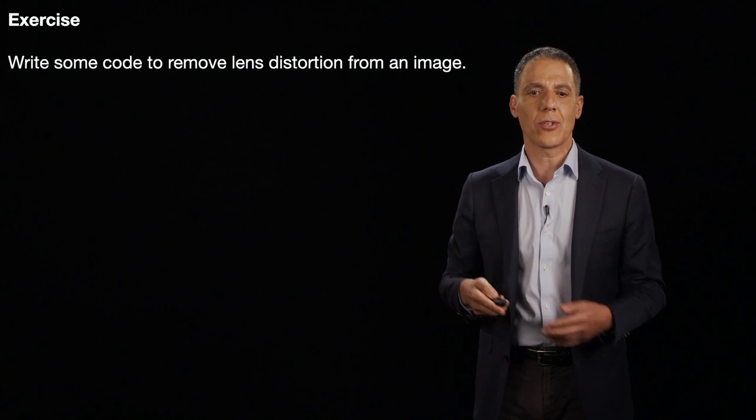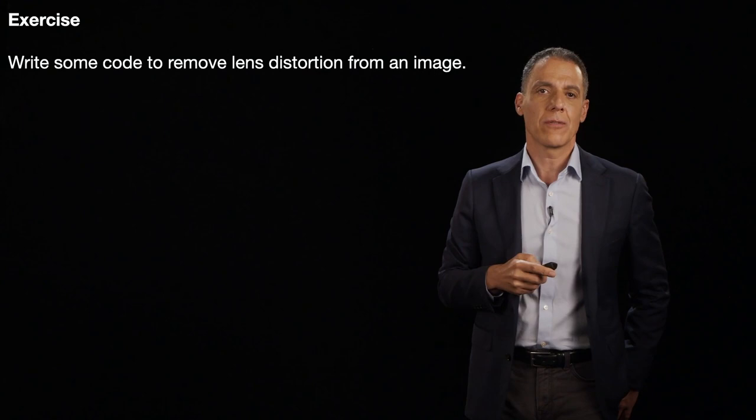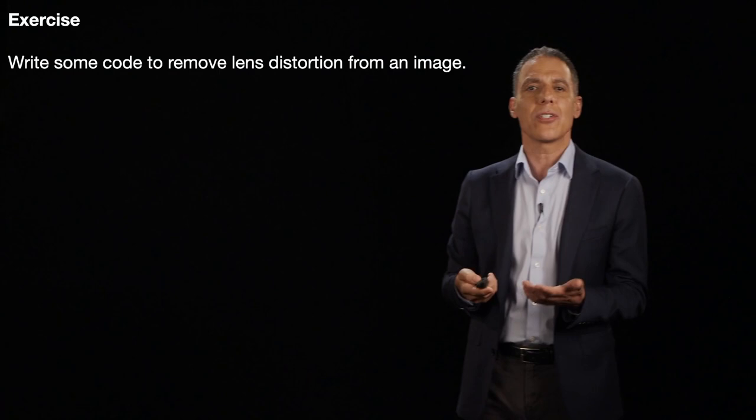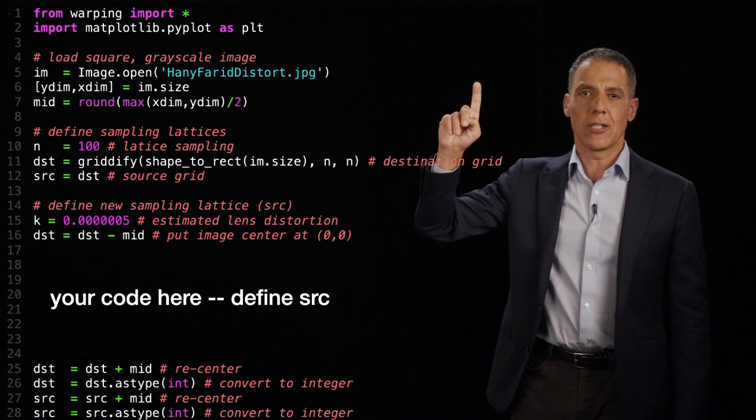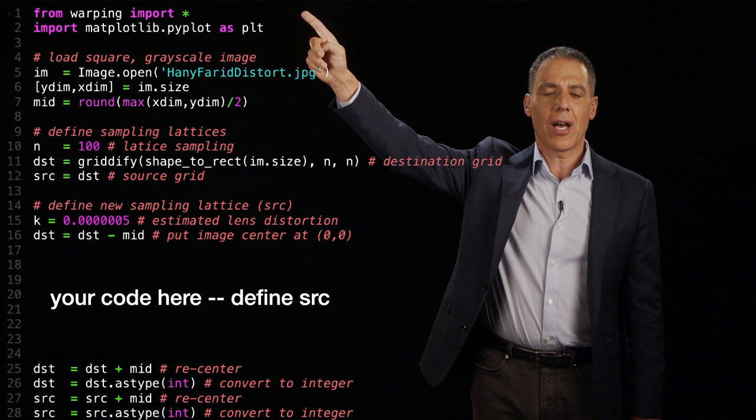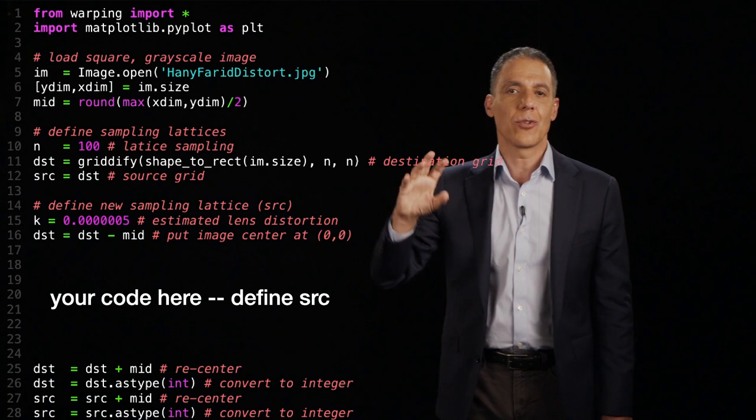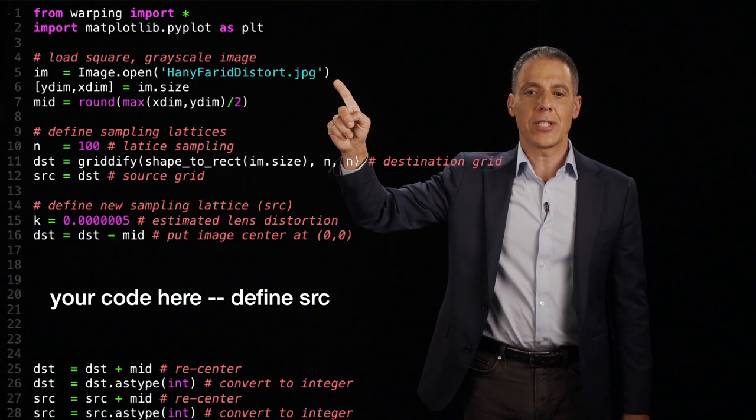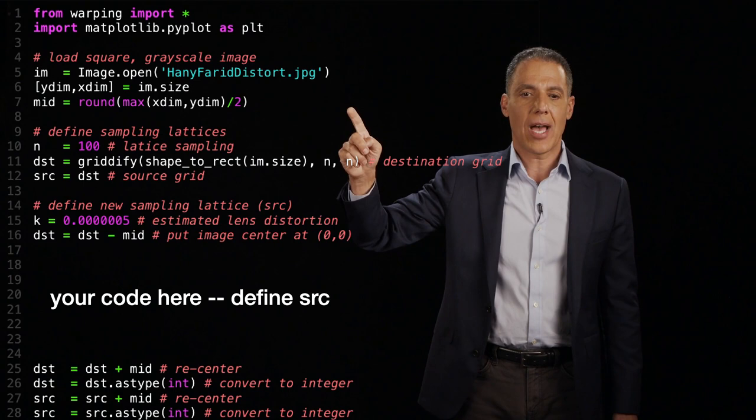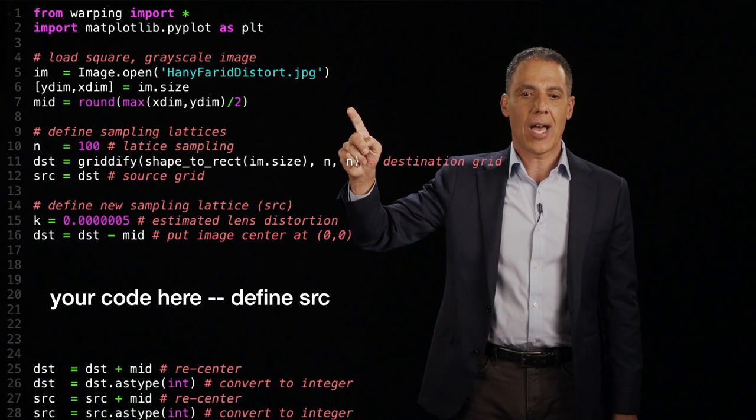I'm going to, in this case, give you some scaffolding code because it's a little bit more involved exercise. So I'm going to ask you to please write some code to remove lens distortion from an image. I'm going to tell you how much lens distortion - I'm not going to ask you to estimate that. But once I tell you the distortion, let's see how to do that. So let me give you some scaffolding code to begin with. I'm going to bring in some Matplotlib, and I'm bringing in from warping some functions that are going to do the interpolation or the removal of the lens distortion for us.